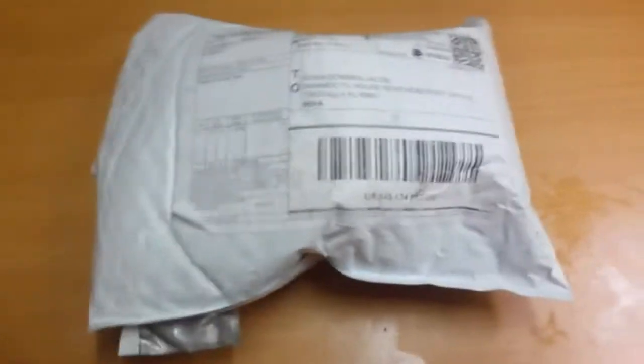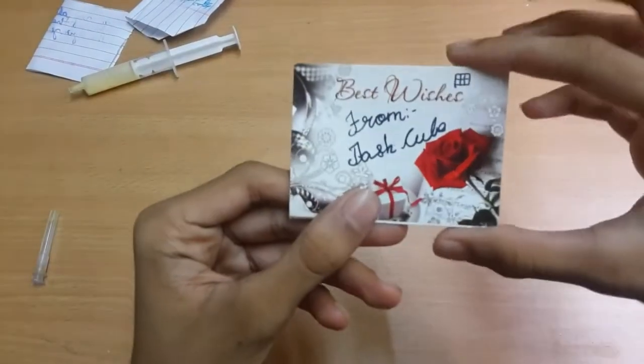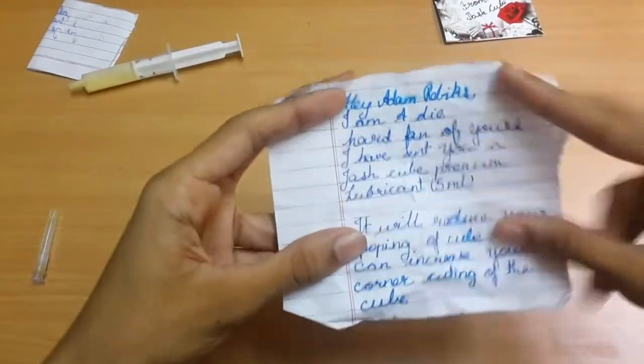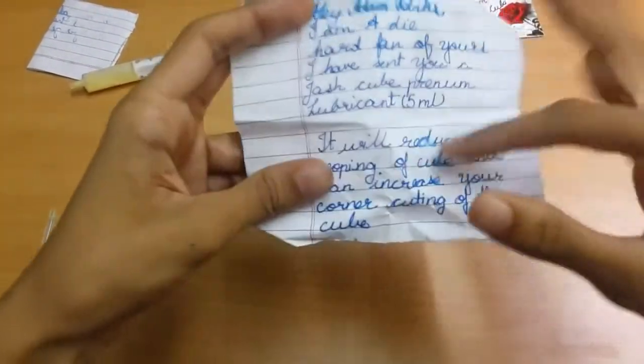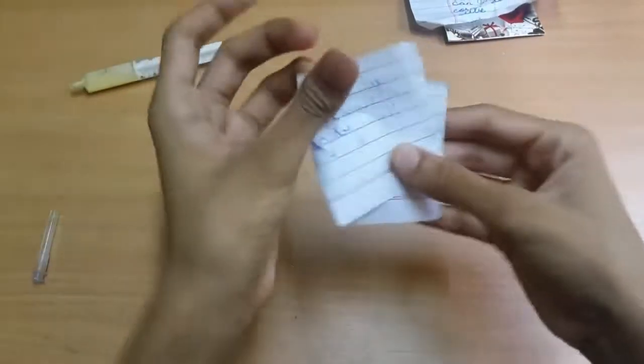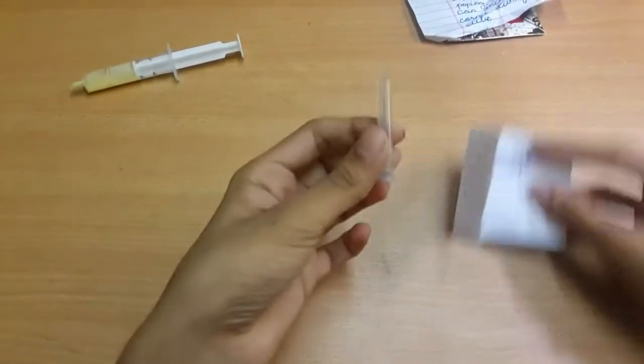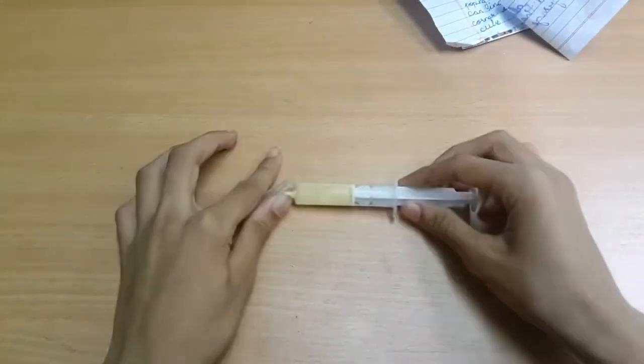He sent me a best wishes card, then we have this letter from him. He added Rubiks. Then we have this - there's a syringe. Okay, so let's try this.